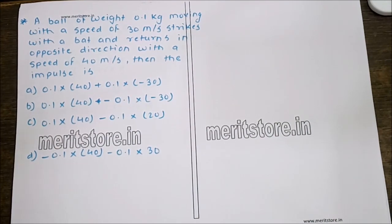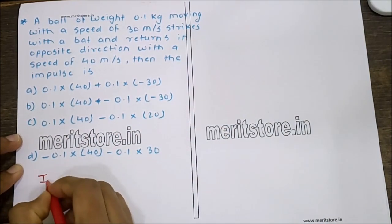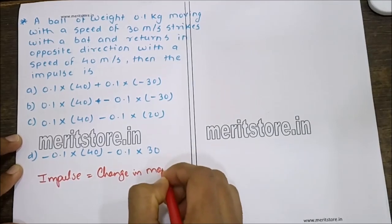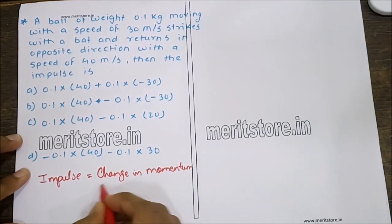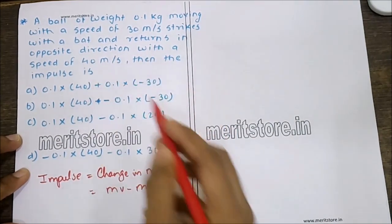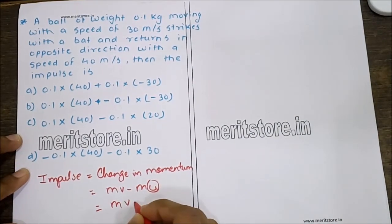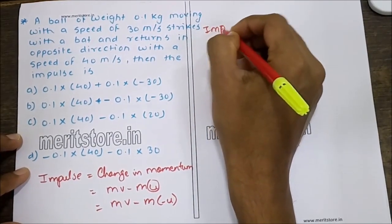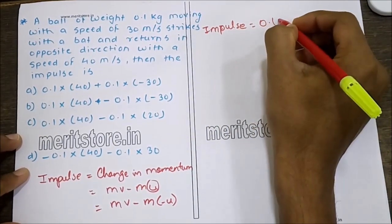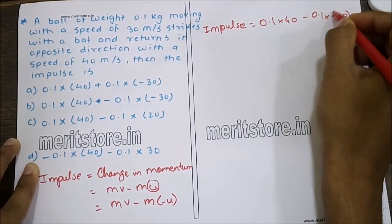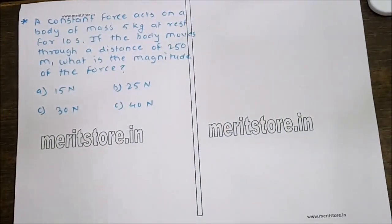A ball of weight 0.1 kg moving at 30 m/s strikes a bat and returns in the opposite direction at 40 m/s. Impulse is change in momentum: MV − M(−U) = M(V + U) = 0.1×40 − 0.1×(−30). Hence option B is the correct answer.